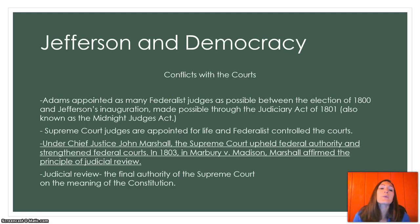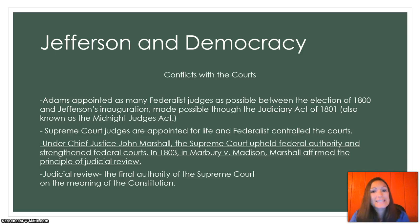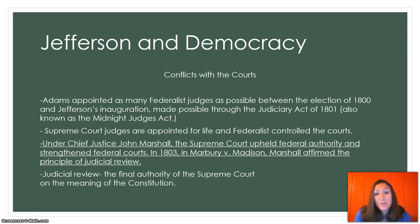Jefferson's democracy had conflicts with the courts. Adams, when he was president, appointed as many federal judges as possible between the election of 1800 and Jefferson's inauguration. This was made possible through the Judiciary Act of 1801, also known as the Midnight Judges Act. Adams knew he was not going to be president anymore, but he also knew that judges are in there for life. So he stacked the courts by putting in so many Federalist judges, loading the courts with Federalists, because he didn't want the Democratic Republicans having all that power.